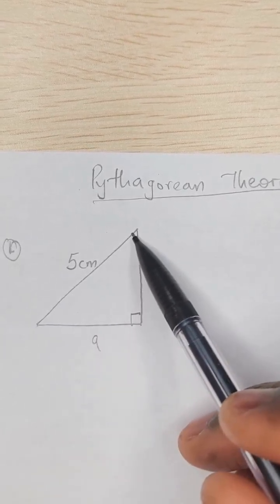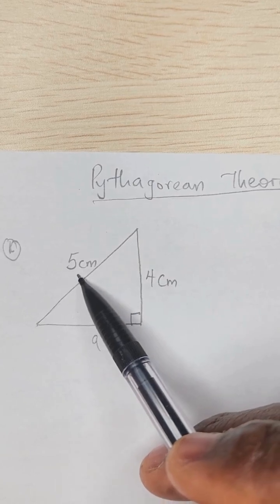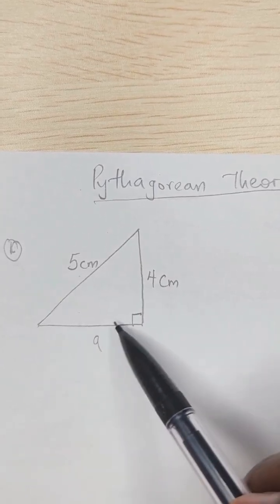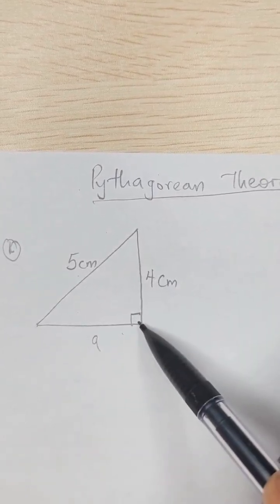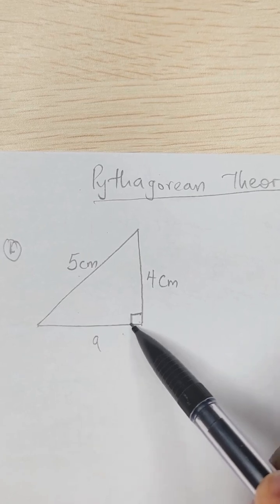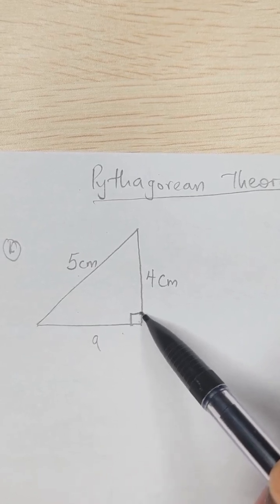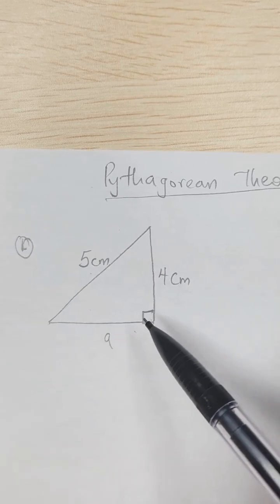The Pythagorean theorem states that the hypotenuse, which is the longest side, squared is equal to this side squared plus this side squared. This is usually for a right angle triangle, which is exactly what we have.